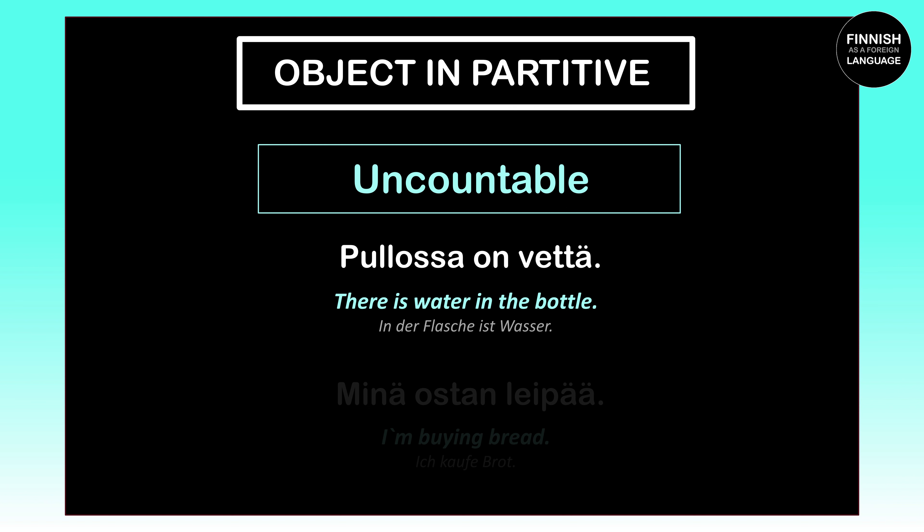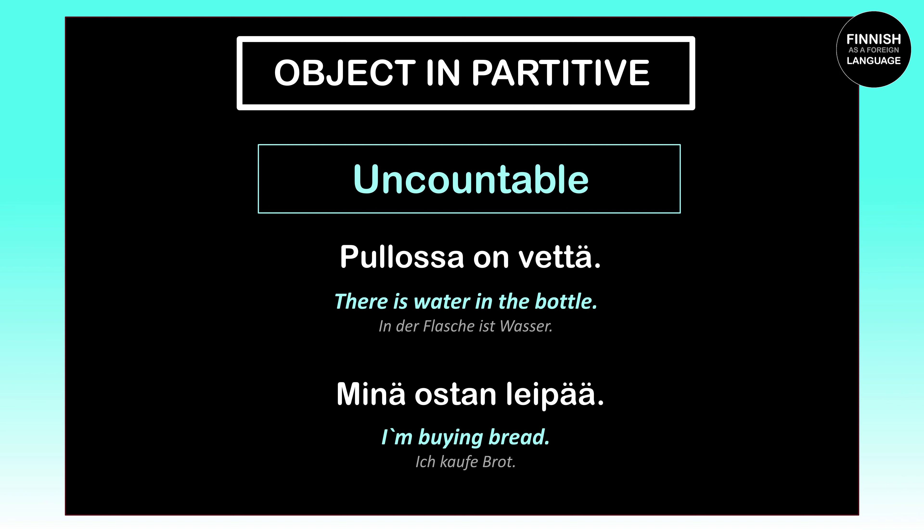Let's do another example: 'Minä ostan leipää' means 'I'm buying bread.' Our object here is bread, which is 'leipä' in Finnish. Since I don't know yet how much bread I'm going to buy — all I know is that I'm going to buy bread — we have to put 'leipä' into the partitive case. That is why 'leipä' becomes 'leipää' with two a's. That's the partitive case.